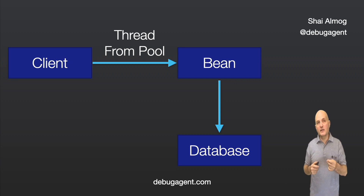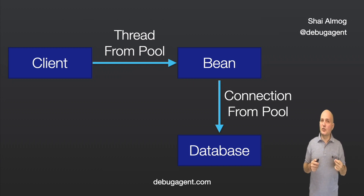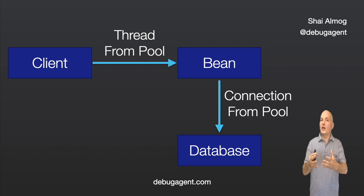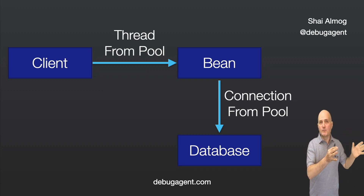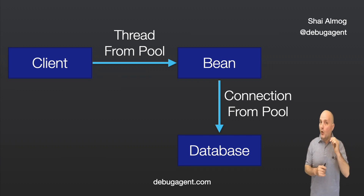When the client connects, we get a thread from the pool. Then that thread from the pool gets a database connection from a different pool. What does that mean? If we run out of database connections, we can't return anything useful. So if we have too many threads but too few database connections, we might be working against ourselves.